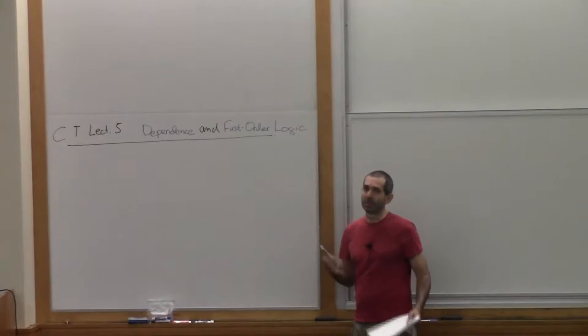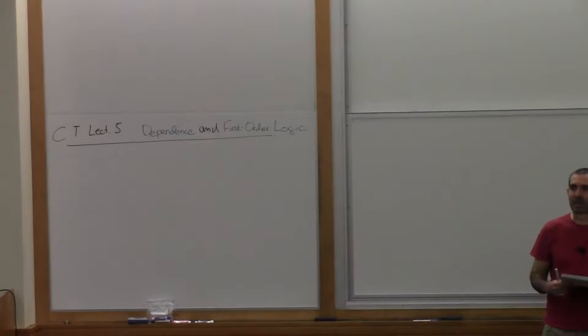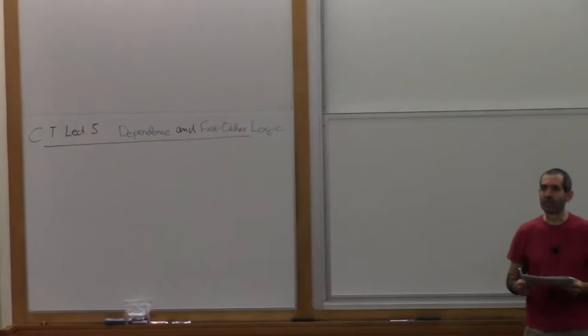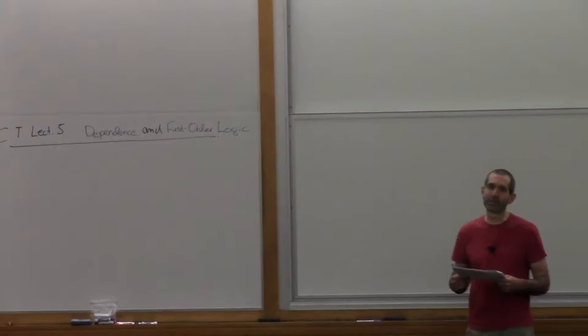So this is my last lecture at the school. Today I'm going to talk about dependence, and then we're going to talk about how to interpret first-order logic. Up until now, we developed enough category theory to interpret traditional situations of propositional logic in the categories. And we found that this is the categorical structure that we needed to do that.